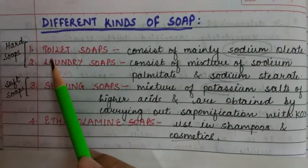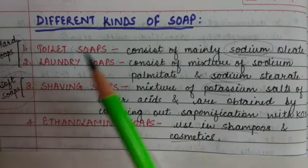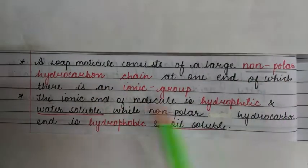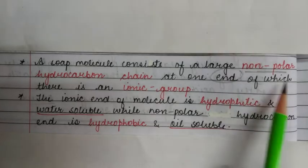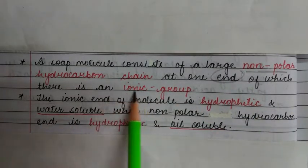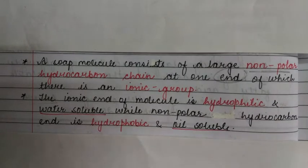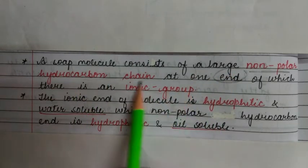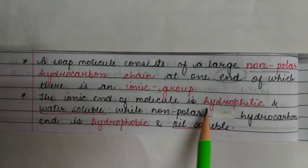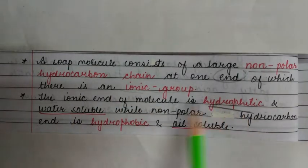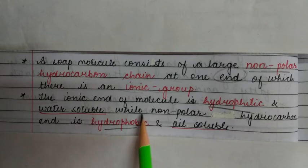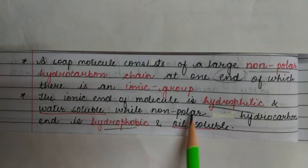Toilet and laundry soaps are called hard soaps, and shaving soaps are called soft soaps. A soap molecule consists of a large non-polar hydrocarbon chain, at one end of which there is an ionic group. The ionic end of the molecule is hydrophilic, meaning water-loving or water-soluble, while the non-polar hydrocarbon end is hydrophobic, meaning water-hating or oil-soluble.